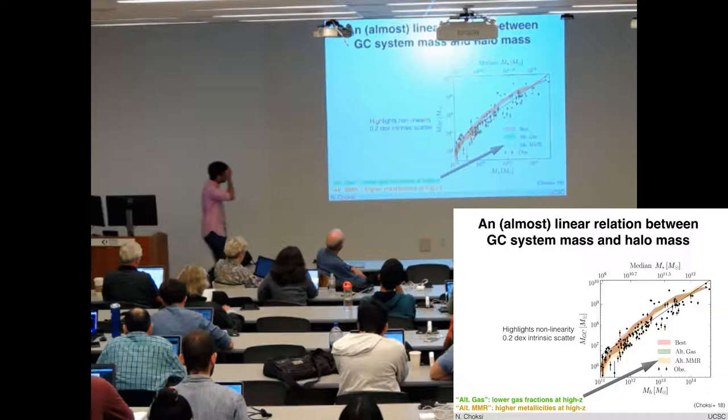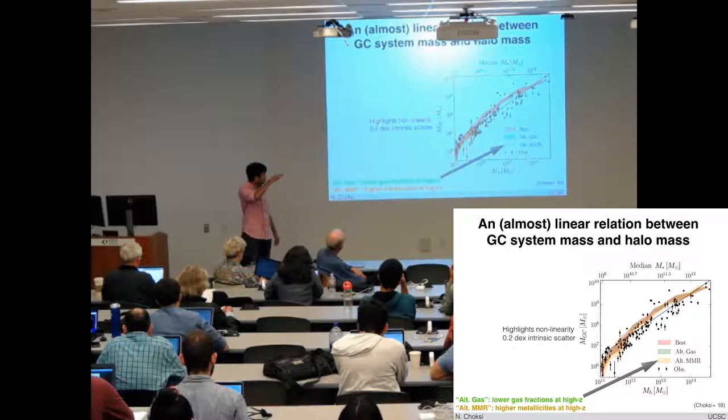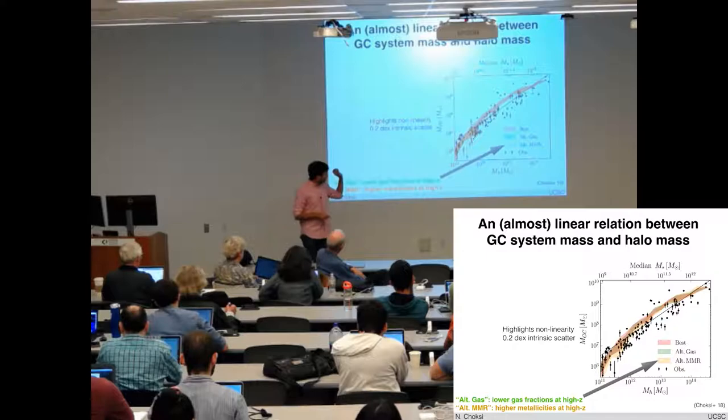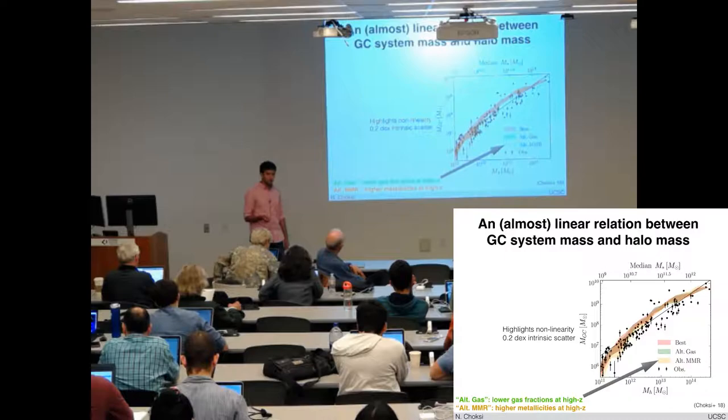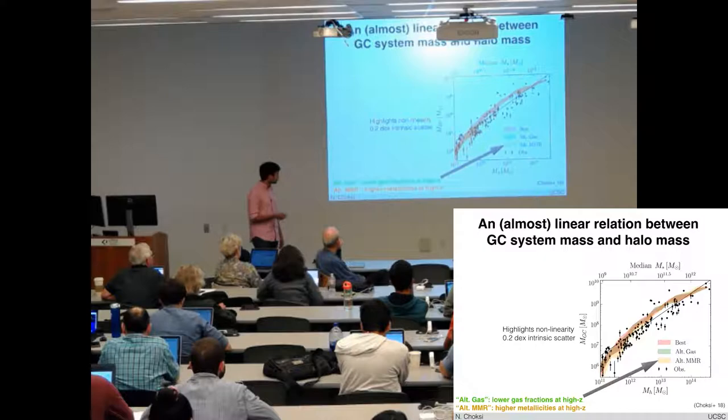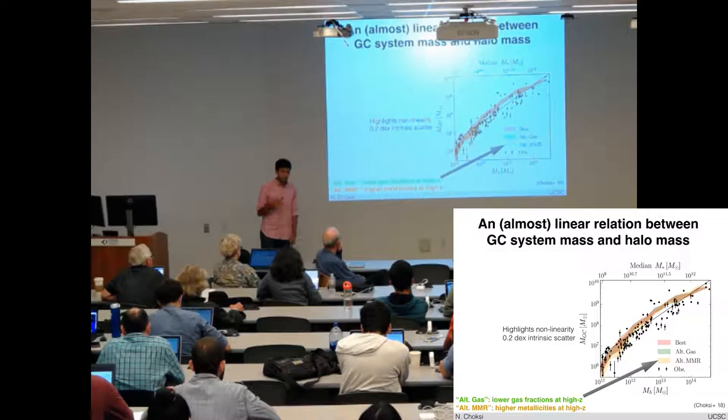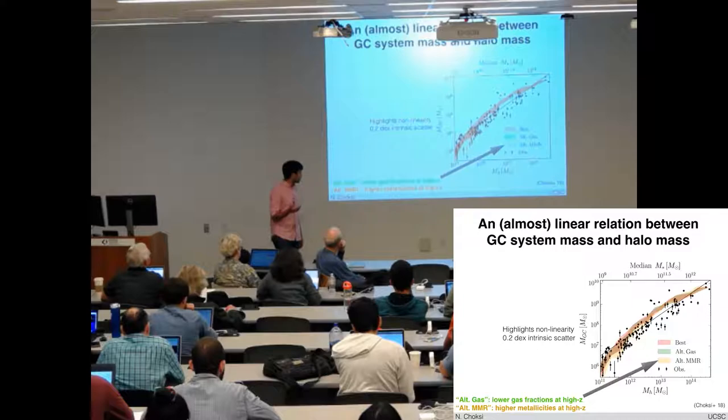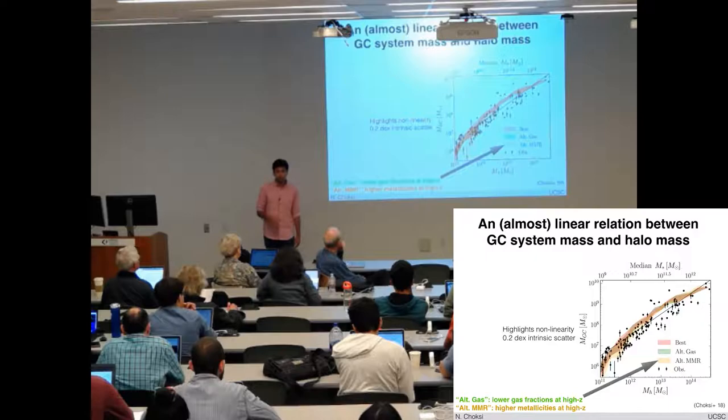The shaded contour here shows the result from the model. You can see it runs through the data points very well. But what I want to highlight in particular is that the model trend is clearly non-linear. But we think it's actually highlighting non-linearity that's already there in the data. If you just calculate the RMS around the median trend in our model relation, it does significantly better than what you get from just the best linear fit. The scatter in the model relation is just 0.2 dex. The observed scatter is somewhere between 0.3 and 0.4 dex. And Bill Harris actually argues that once you take into account the observational errors, this is actually closer to about 0.2 dex intrinsic scatter.